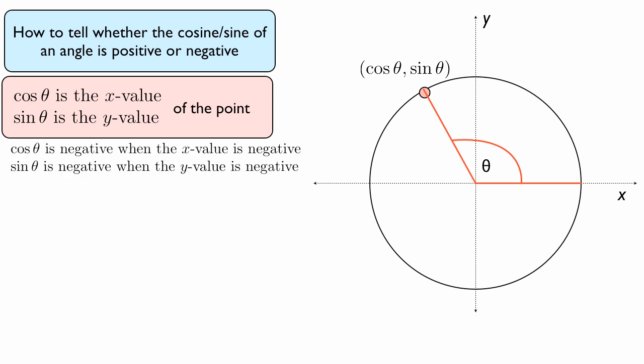So this is the conclusion. Cosine theta is negative when the x value of that point is negative, and it's positive when the x value is positive. Sine theta is negative when the y value of the point formed by the angle is negative. Also, sine theta is positive when the y value is positive.